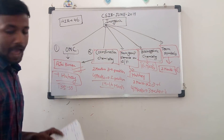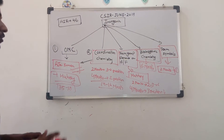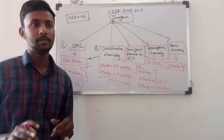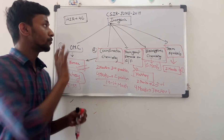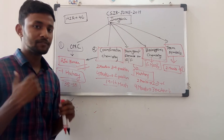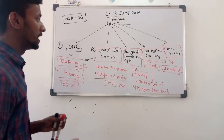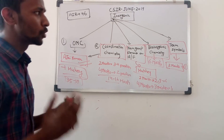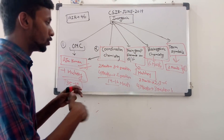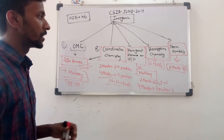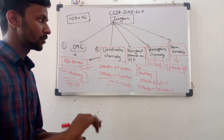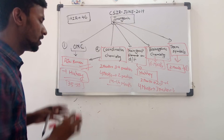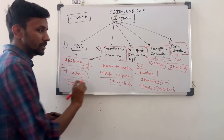These are the topics to cover first for CSIR. Inorganic chemistry is very easy - everyone should focus on it because they don't ask very difficult conceptual questions. They mostly ask about facts. If you know the fact or what is written in the book - the general experimental finding - then you can easily get the correct answer.